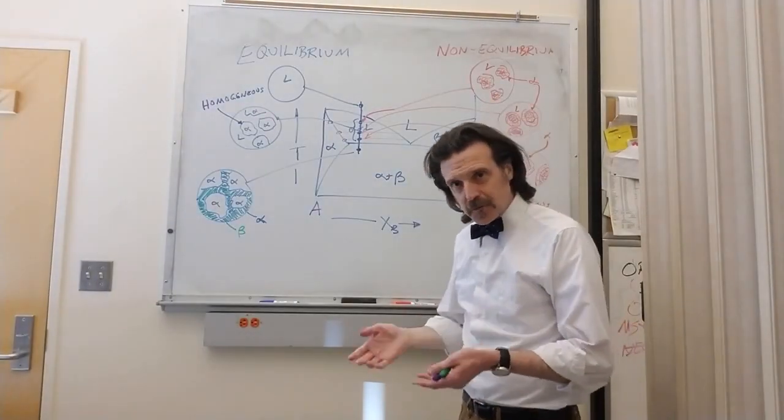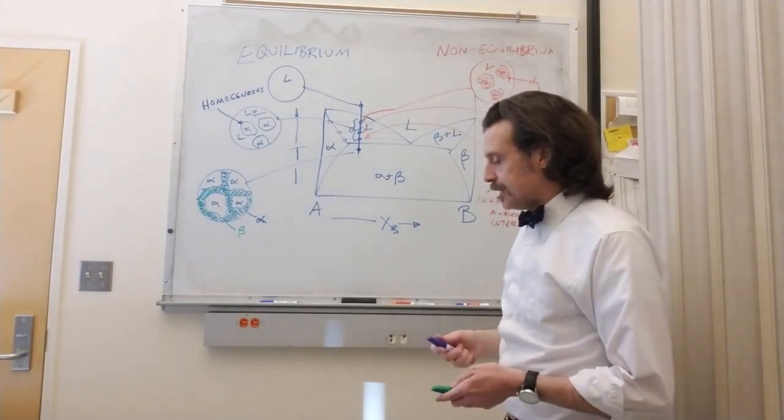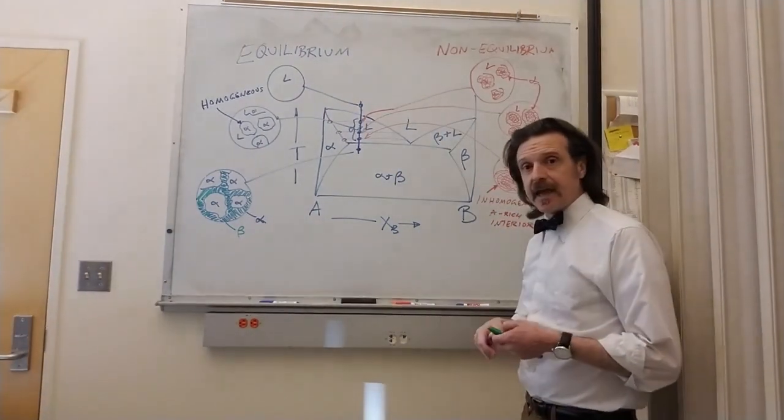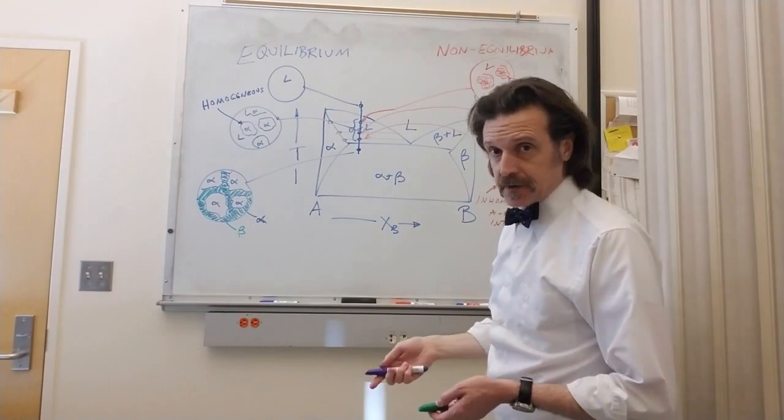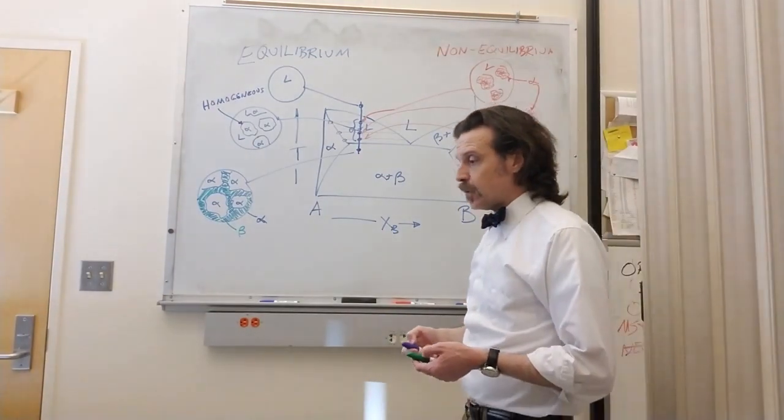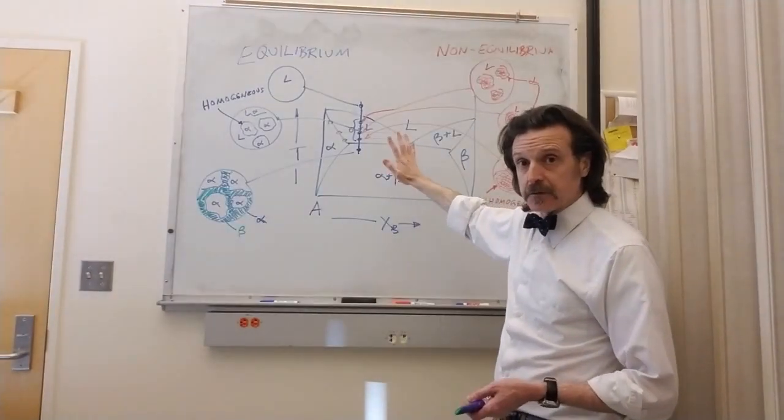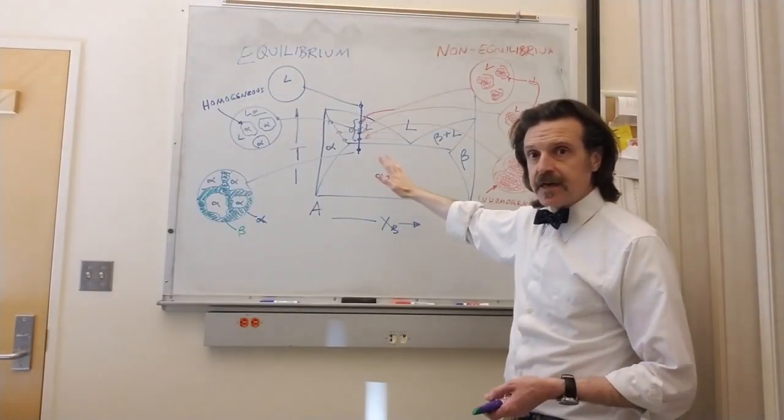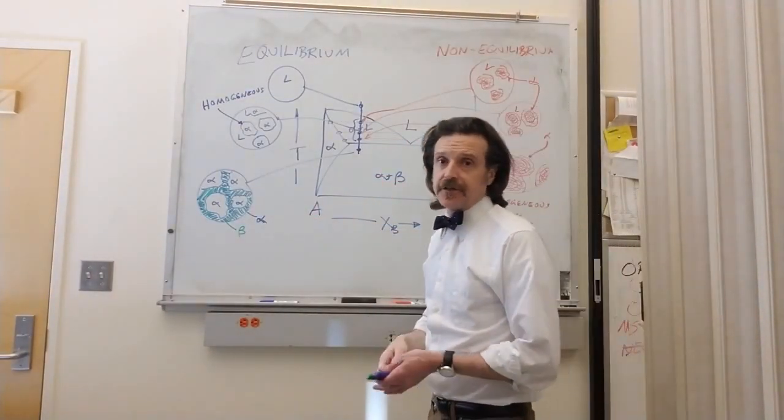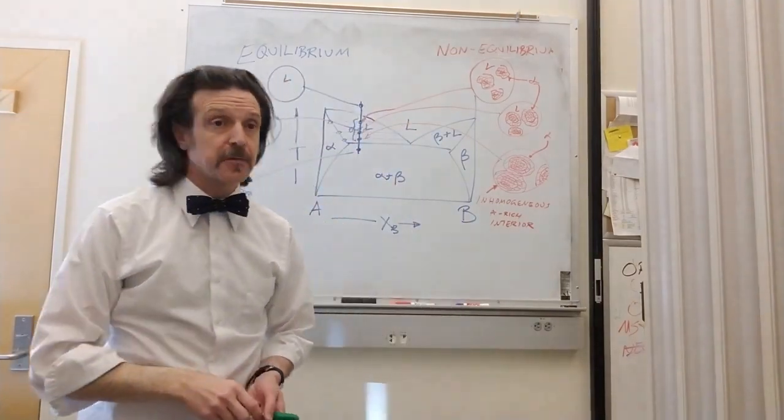We know that in real life that's not how it works. We have to consider non-equilibrium conditions. The way we do that is we generate the phase diagram for the equilibrium case and then interpret it thinking about non-equilibrium events.